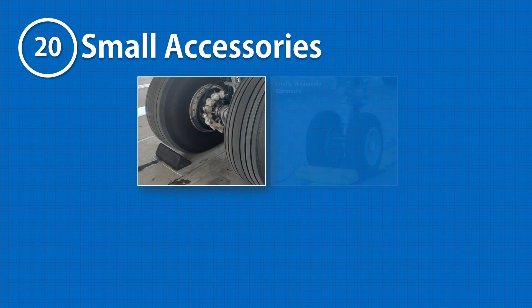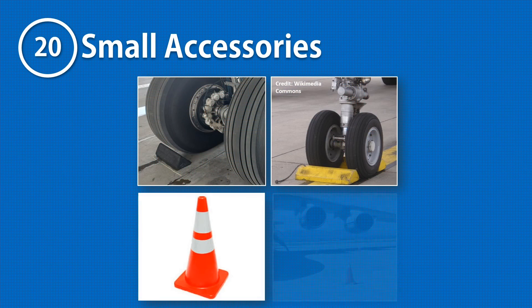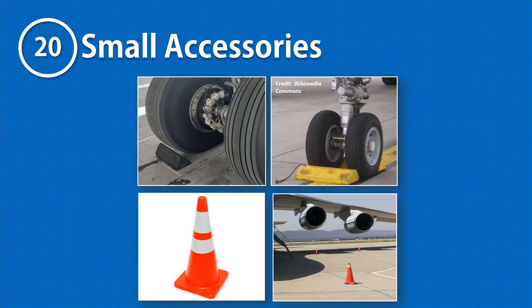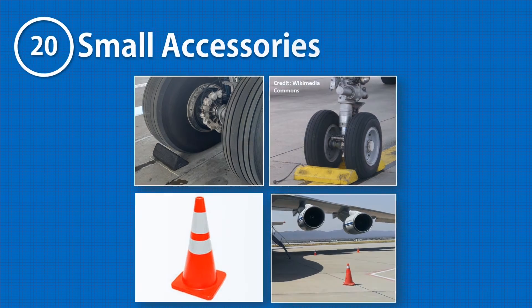Lastly, some small accessories such as safety cones and wheel chocks are also categorized as ground support equipment owing to the important support function they perform in ramp operations.